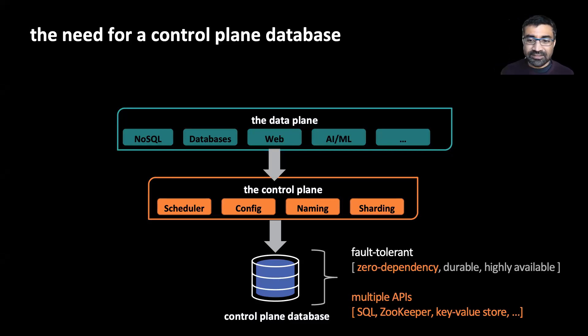This database has two properties. First, it has to be extremely fault tolerant, and in particular, it has to be zero dependency, which means it can't rely on any other services for functionality, such as membership, failure detection, and so on. Second, we found that our control plane services are quite diverse in how they store and access data. So we need multiple APIs, including SQL, key value pairs, zookeeper namespaces, and so on.